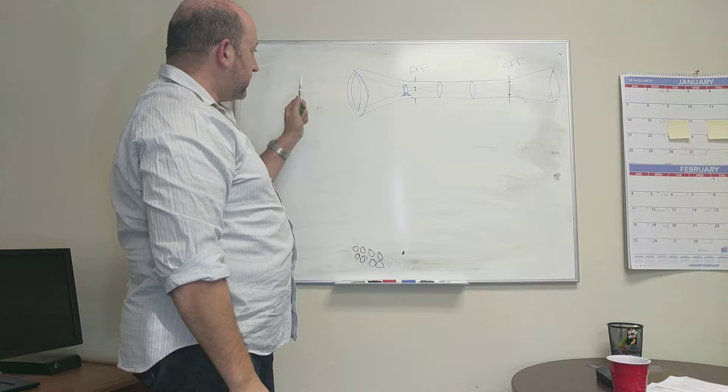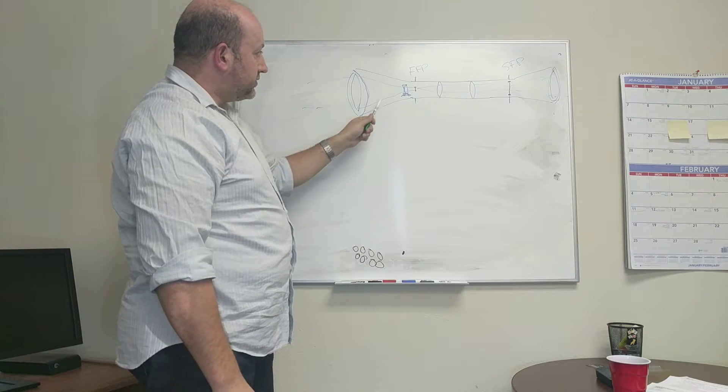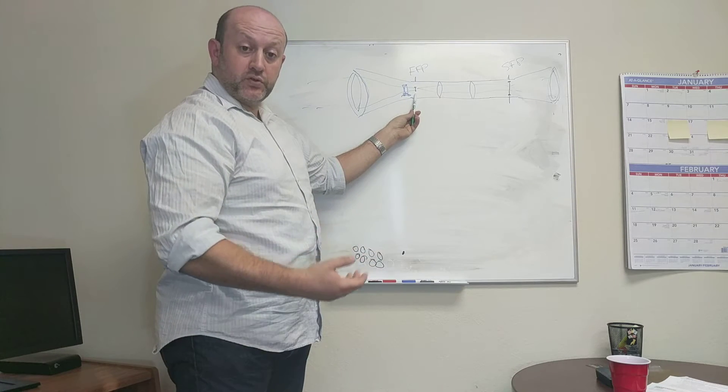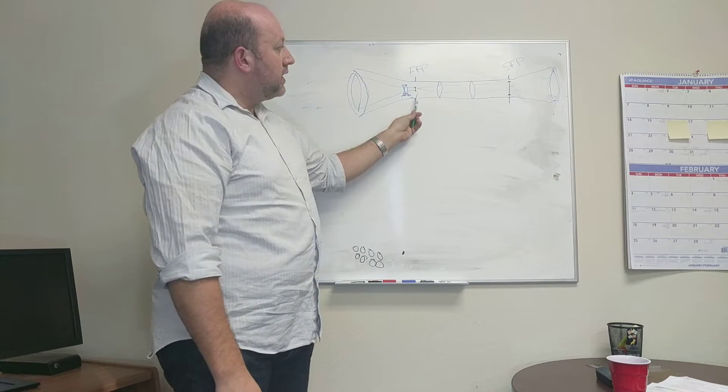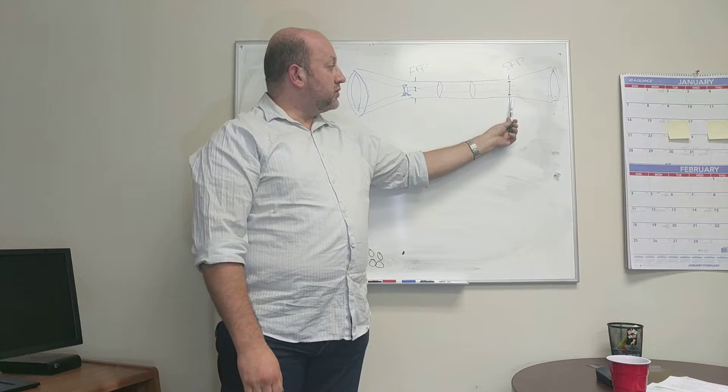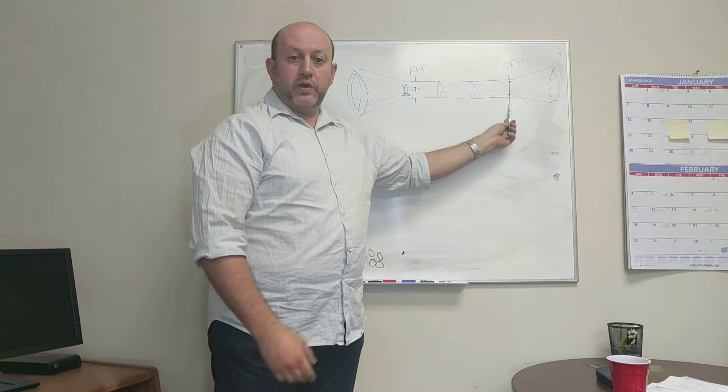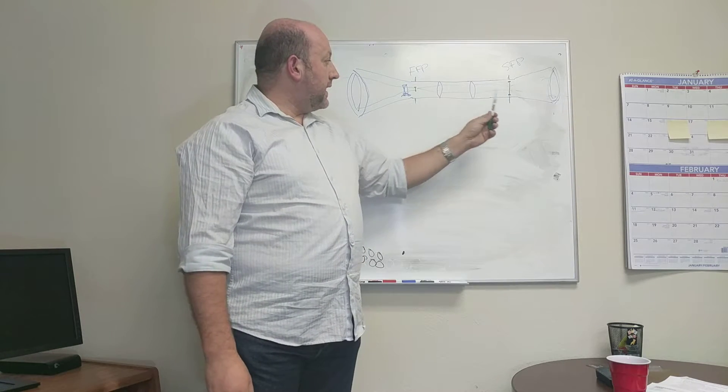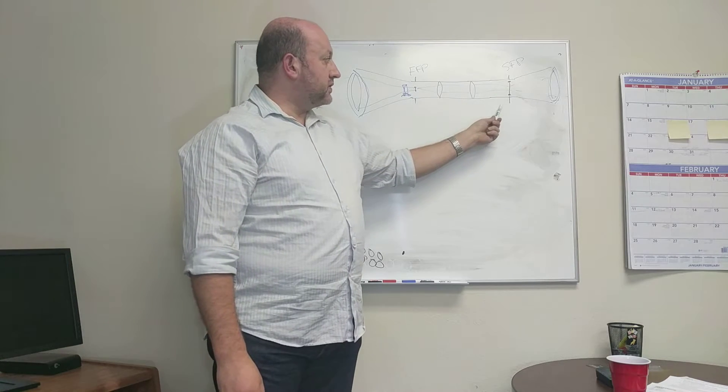And then from here it gets projected out of the eyepiece. So there are three optical systems. Basically what happens is that the objective is supposed to be focused on where the front focal plane is. In an FFP scope, that's where the reticle is. The eyepiece is supposed to be focused on the rear focal plane where the reticle is on hunting scopes.